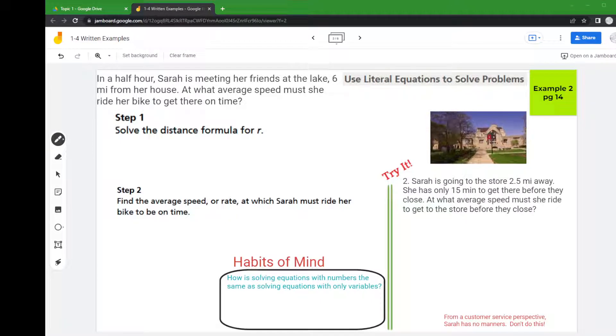It says in a half hour Sarah is meeting her friends at the lake which is six miles from her house. At what average speed must she ride her bike to get there on time?